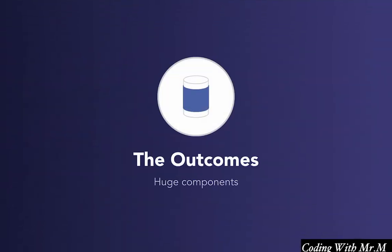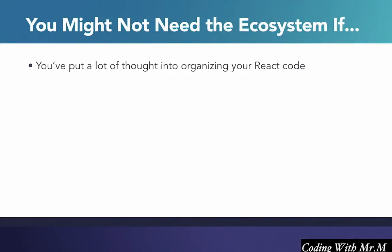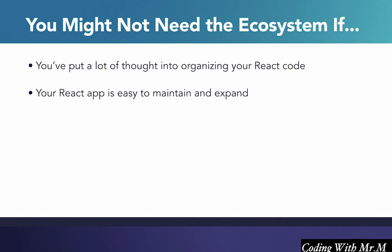This means that what we usually end up with in a Vanilla React application are these huge, tangled components that contain all the logic for loading and managing their own data, and this can make your React projects very hard to expand and maintain. So if you've already put a lot of thought into organizing the code in your React project and you've found something that works for you and your team, then you probably don't need all the tools we'll talk about in this course. However, if any of what I've mentioned so far sounds familiar — and I've been at many companies where this is the case, so you're not alone — you'll probably benefit a lot from learning about the React ecosystem tools and incorporating them into your codebase.